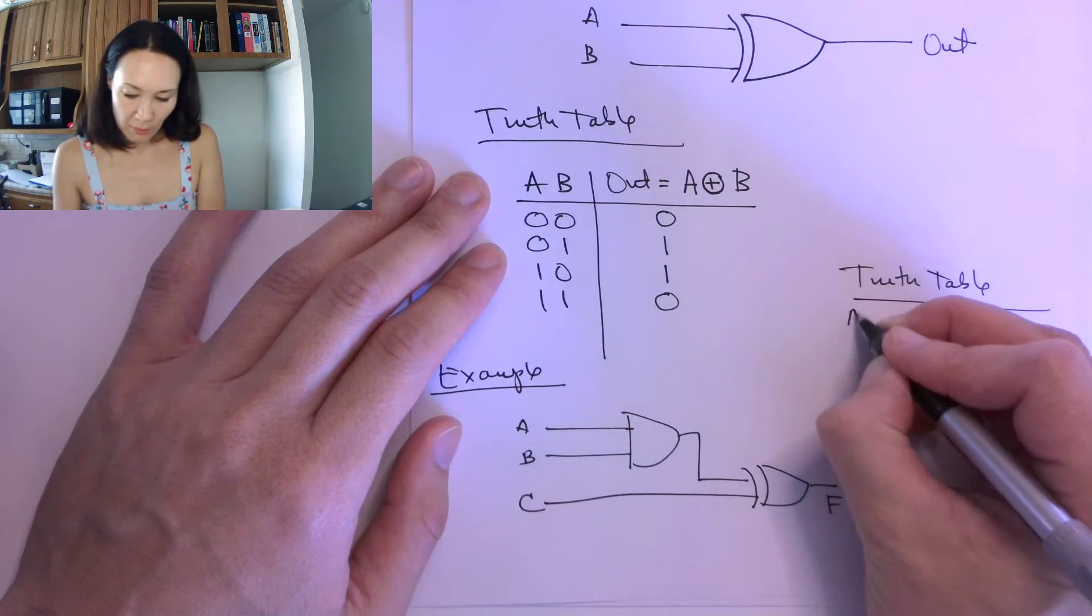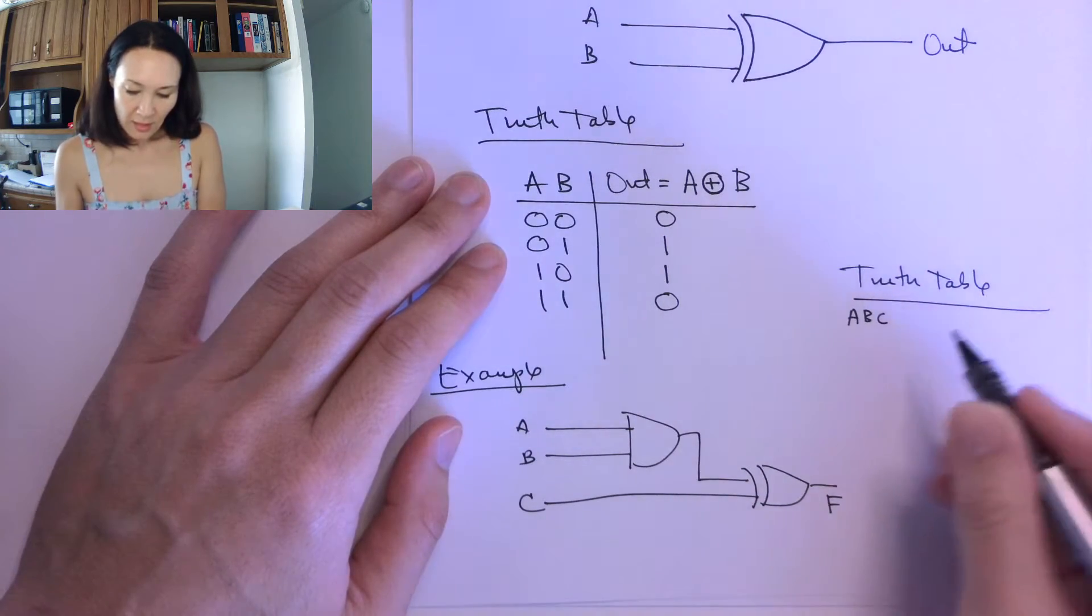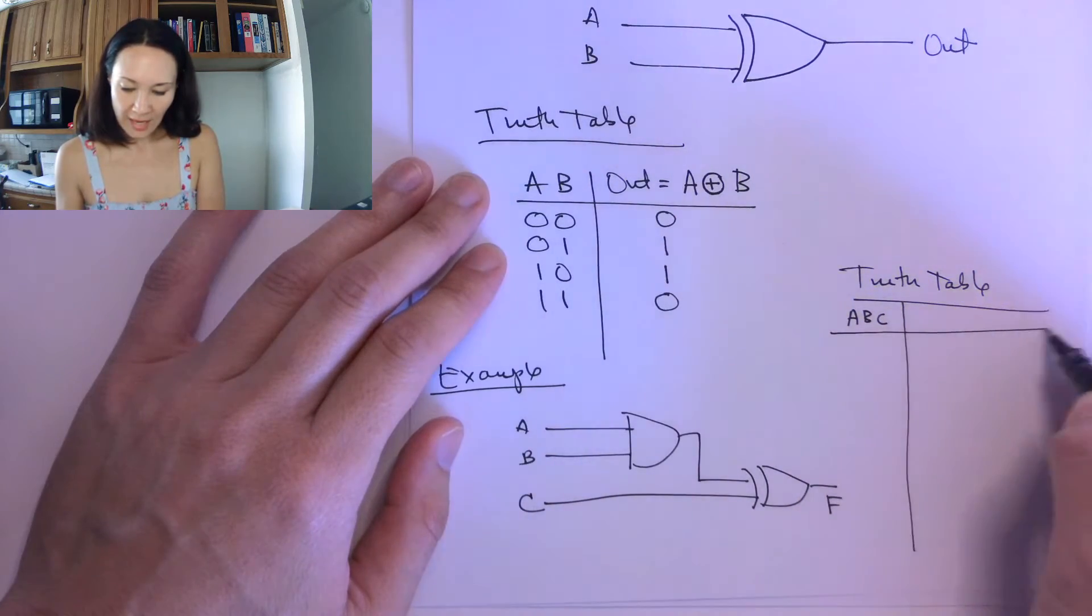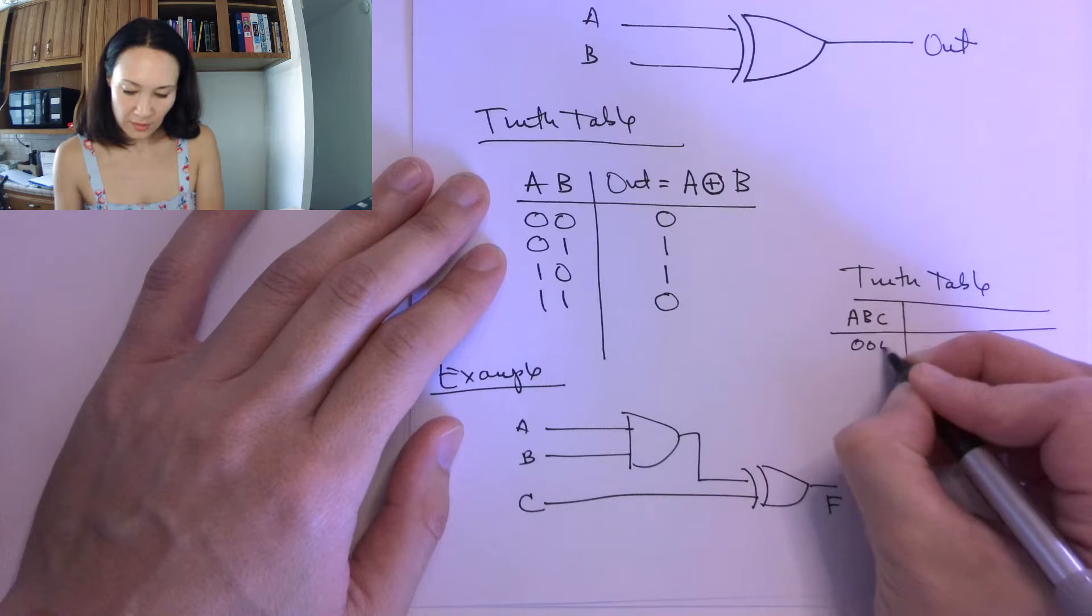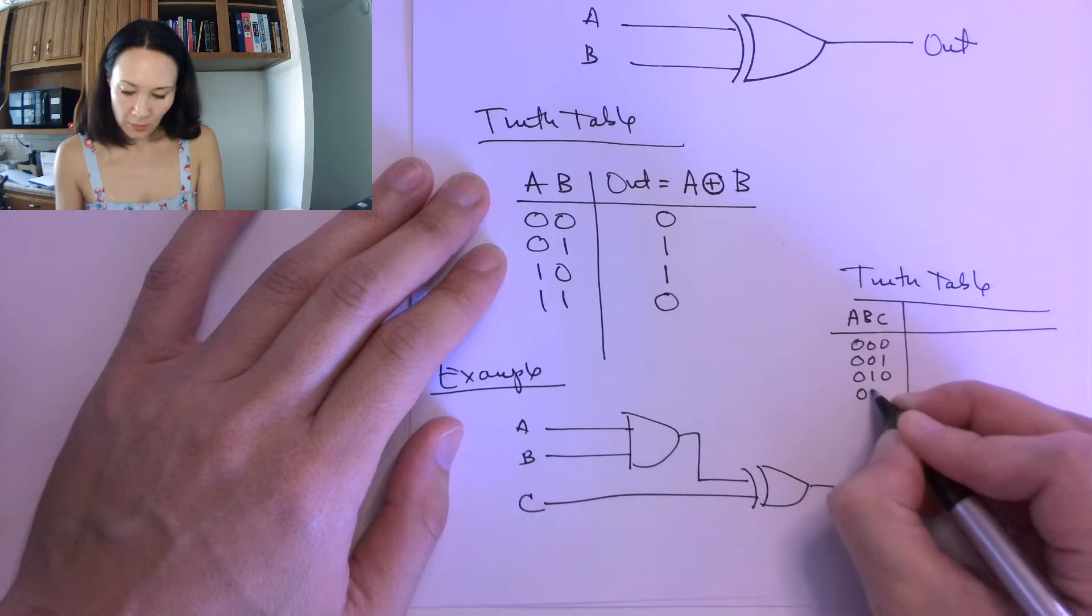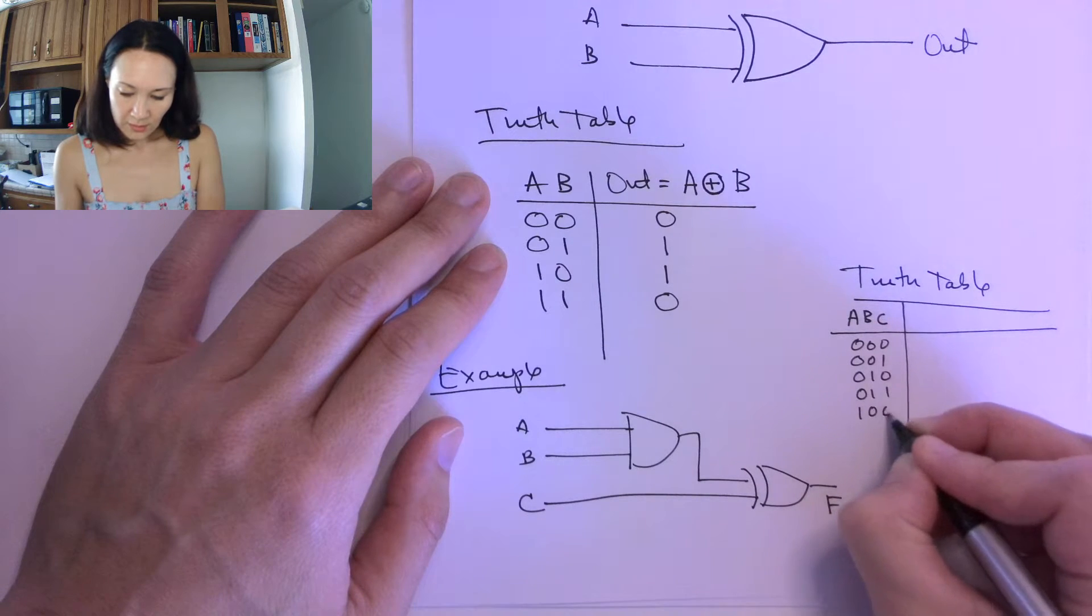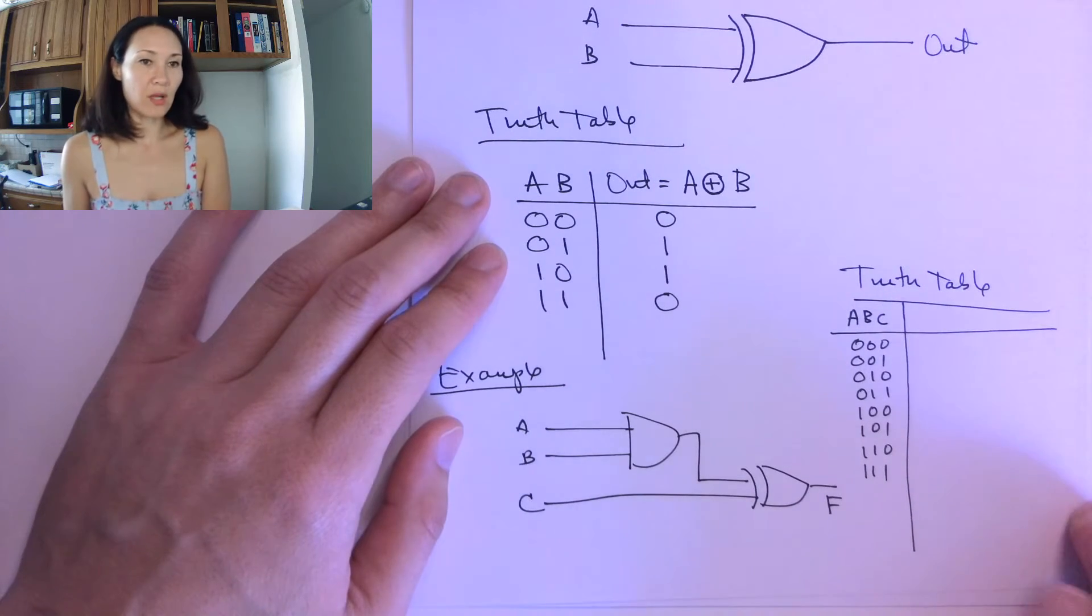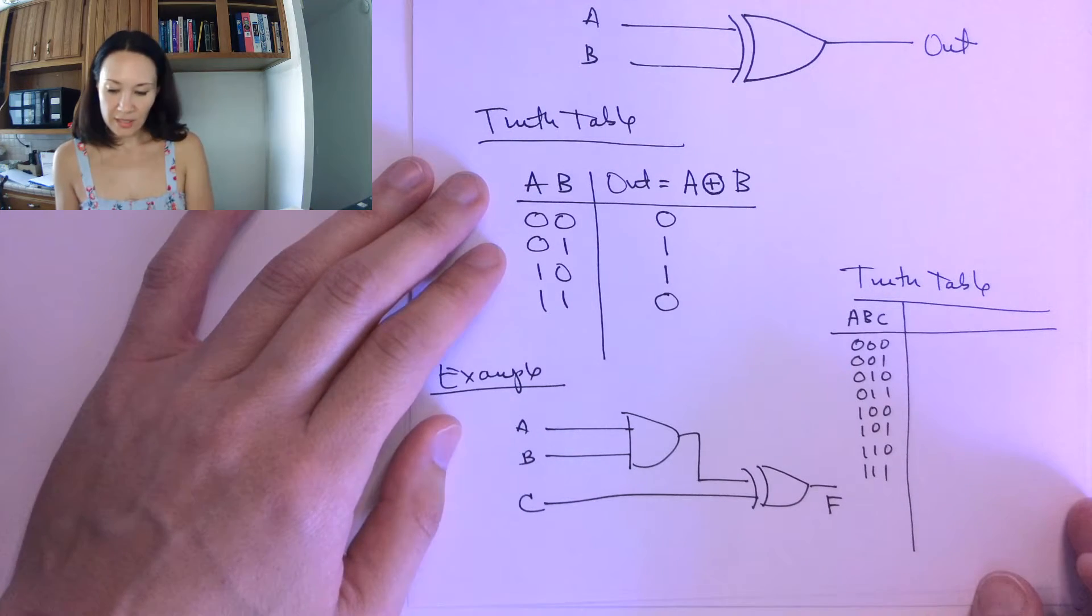We can write all of our inputs here, A, B, C. Now to scroll through all the input combinations, we just count in binary: 0, 0, 0, 0, 0, 1, 0, 1, 0, 0, 1, 1, 1, 0, 0, 1, 0, 1, 1, 1, 0, and 1, 1, 1. That's all the possible combinations for inputs A, B, and C.